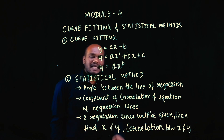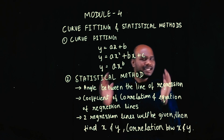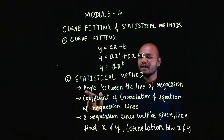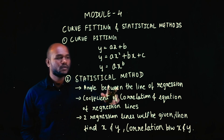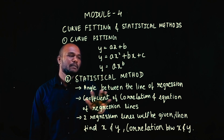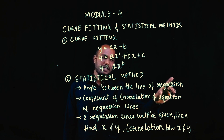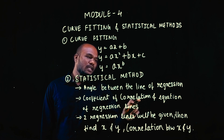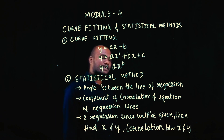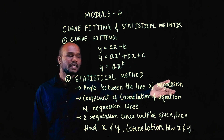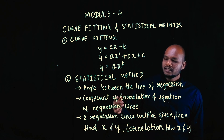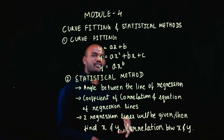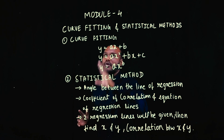The second topic in module 4 is statistical methods. The most frequently repeated question is the angle between lines of regression — theta — which involves a derivation. Please do this derivation so you can get easy marks. The formula involves R1 and R2 related terms. Other question types include finding the coefficient of correlation and equation of regression lines from a tabular column of x and y values, and solving problems where two regression lines are given and you must find values of x, y, and their correlation.